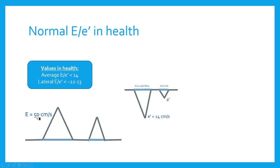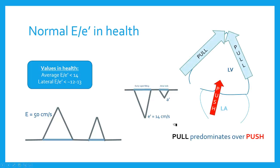These would be normal values: E of 50 in health, E prime somewhere around negative 14. In health, pull predominates over push — E is not very fast, E prime is fast, the ratio is well under 10. Pull is the predominant mechanism of E velocity in health.